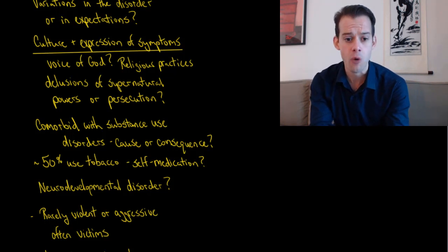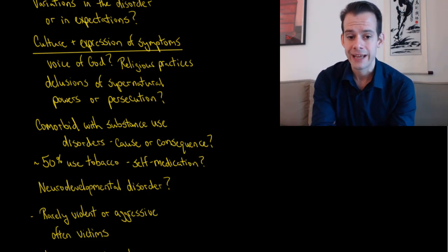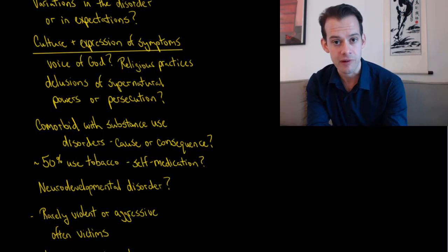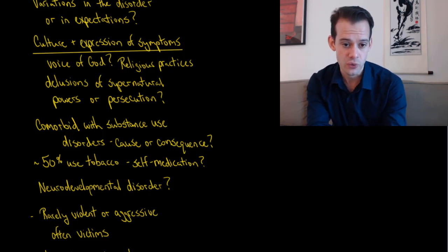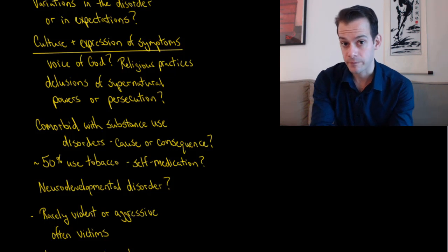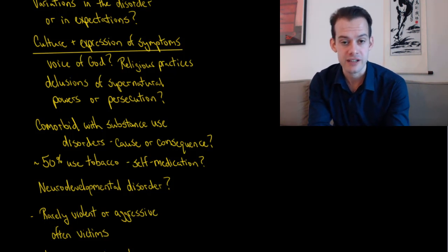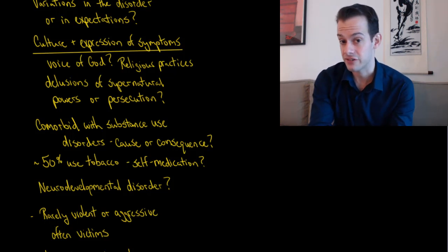Schizophrenia is comorbid with substance use disorders. We might wonder whether this is a cause or consequence. If we see this overlap we might wonder perhaps substance abuse is related to causing some of the symptoms that the person is suffering from, or it could be the case that suffering from schizophrenia is causing the person to be more likely to seek out certain substances. One way we might see this is in the fact that about 50% of patients who suffer from schizophrenia use tobacco. We might wonder if this is a type of self-medication, whether there's something about tobacco use and its influence on neurotransmitter levels like acetylcholine and dopamine, and whether this has something to do with reducing or minimizing some of the symptoms.